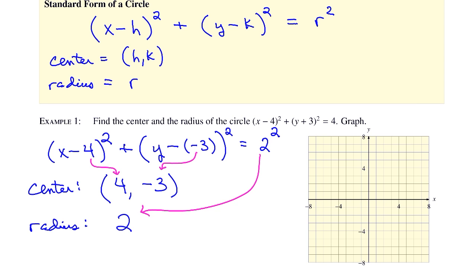We need the radius to be positive for it to be a circle. To graph it, I'll start with the center, even though the center is not part of the circle. The center is at 4 comma negative 3. Then from the center, we go out two units to the right, to the left, up and down, and connect it with the best circle we can. So 2 over to the right, 2 over to the left, 2 up, and 2 down, and then draw the circle.